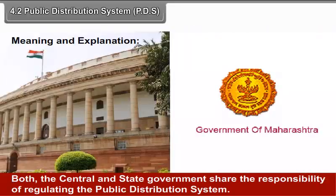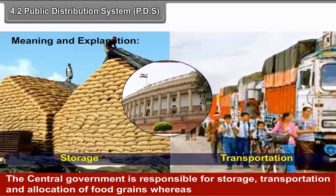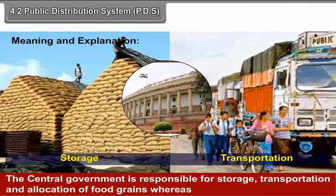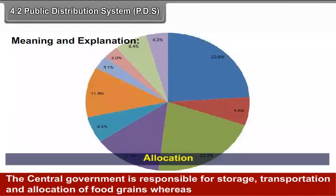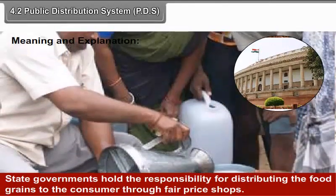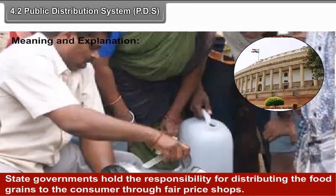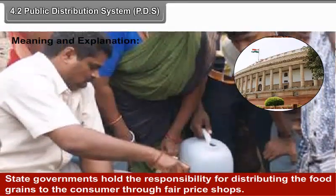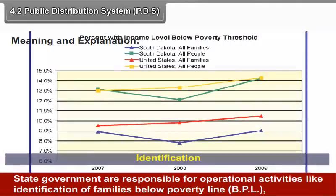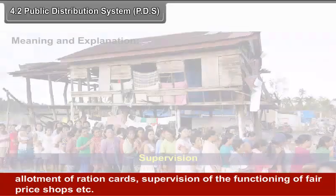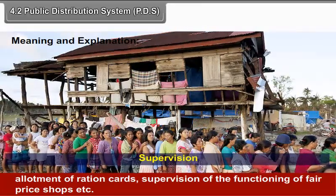Both the central and state government share the responsibility of regulating the public distribution system. The central government is responsible for storage, transportation, and allocation of food grains, whereas state government holds the responsibility of distributing the food grains to the consumers through fair price shops. State governments are responsible for operational activities like identification of families below the poverty line, allotment of ration cards, supervision of functioning of fair price shops, etc.